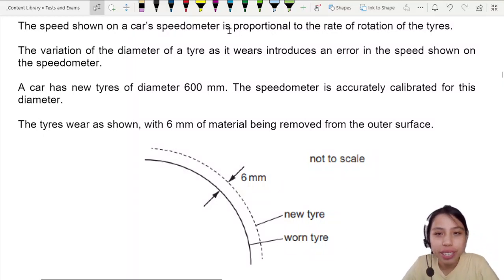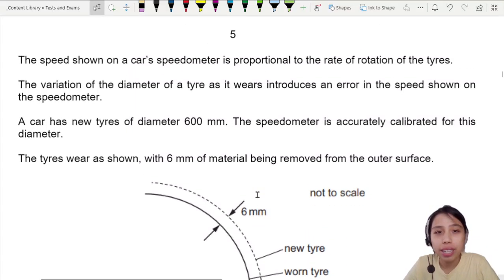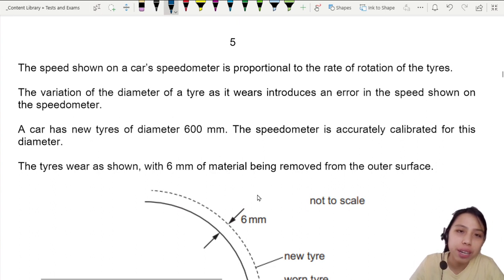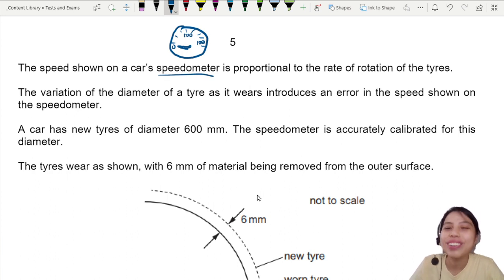The speed shown on the car speedometer is proportional to the rate of rotation of the tires. When you see a car with meters and the needle pointing from zero to 100, maybe 180 depending on how powerful your car is, how does the car know how fast you're traveling? They don't actually know. They are just looking at how fast the tire is rotating.